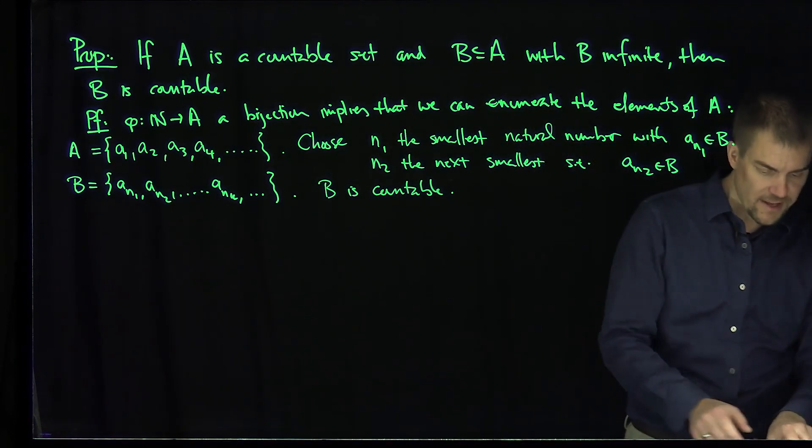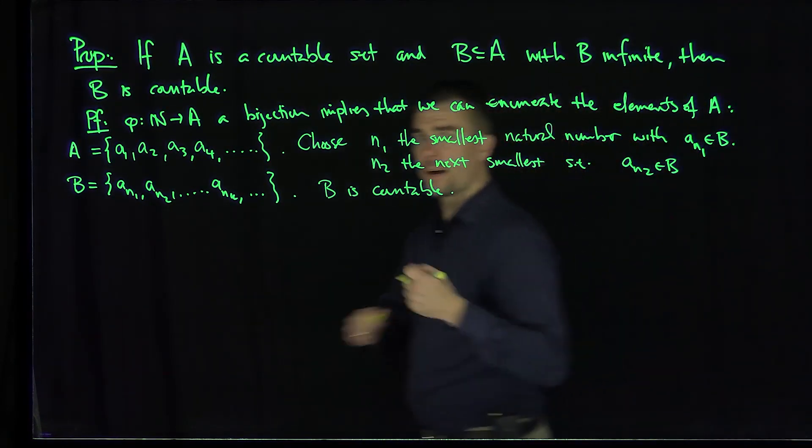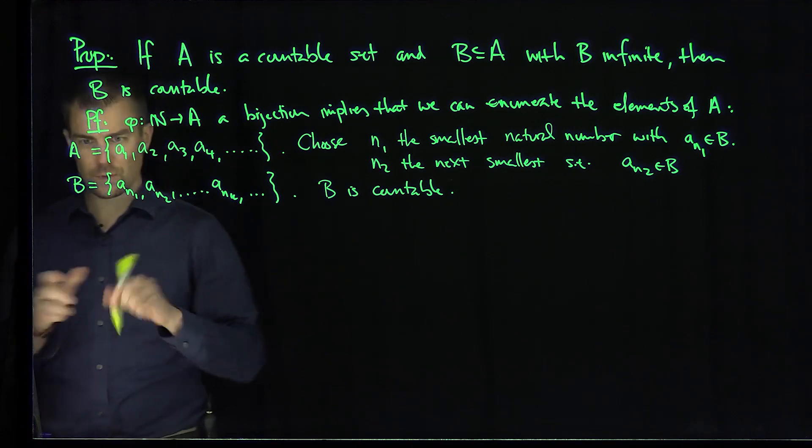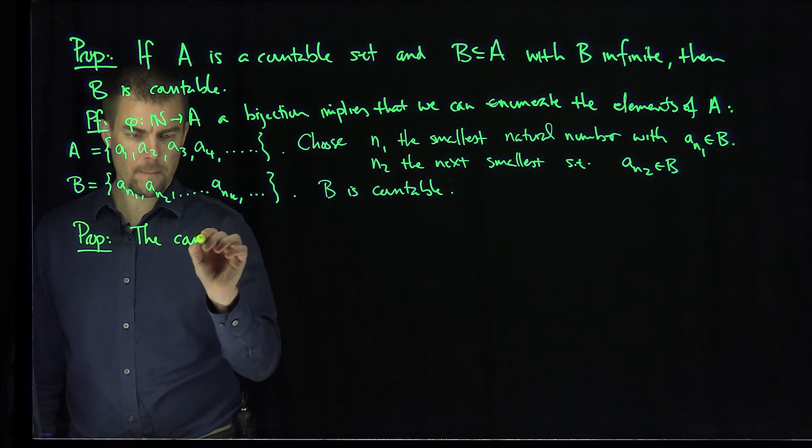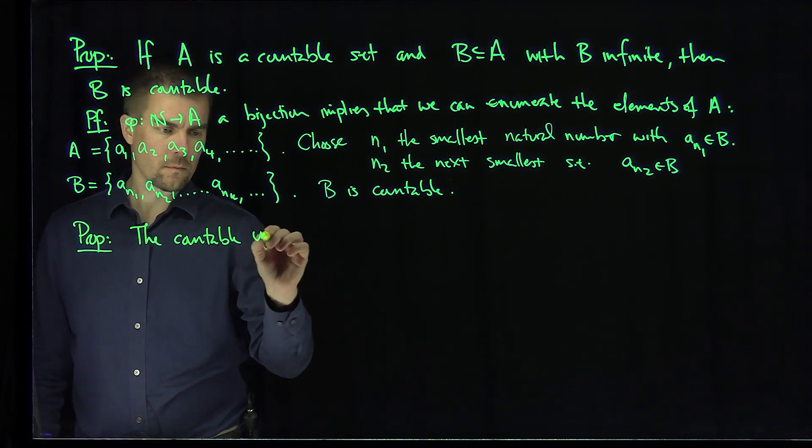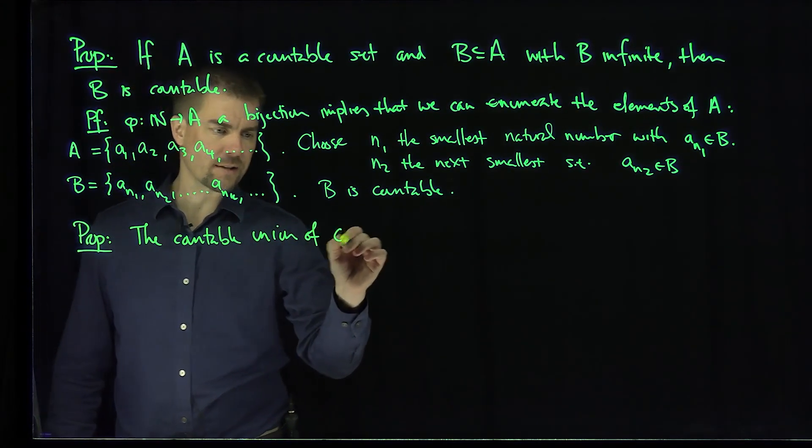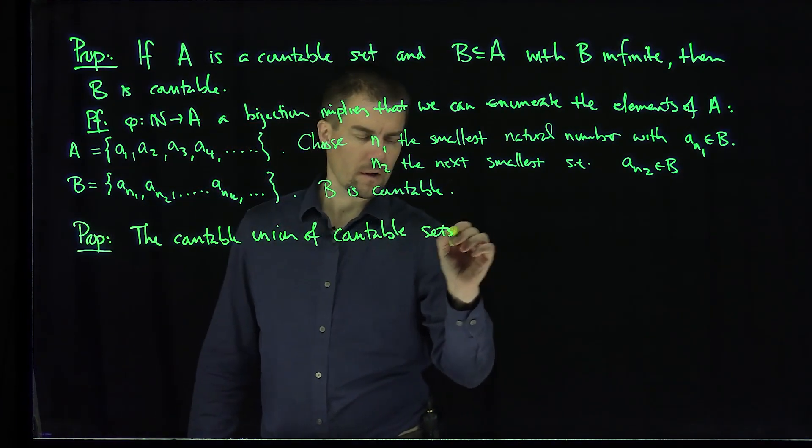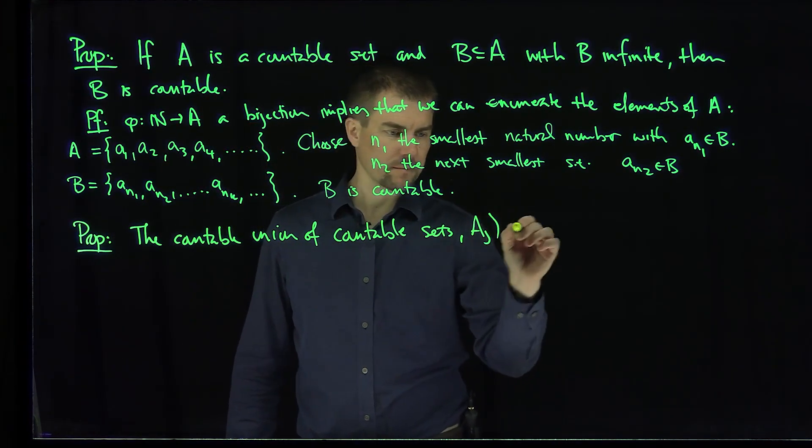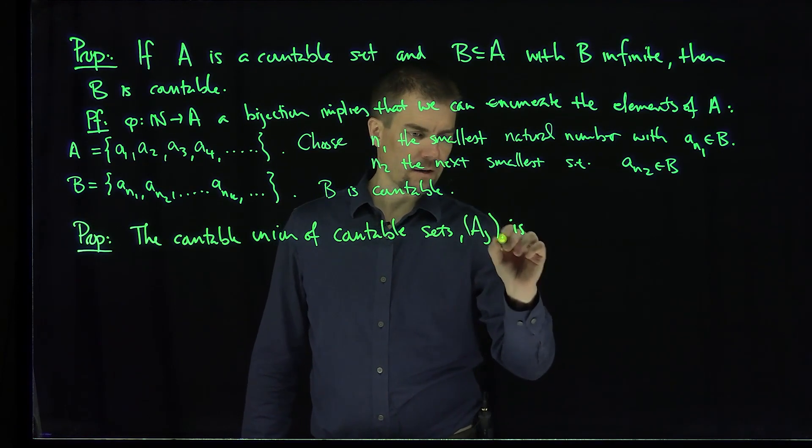The second result we have is that the countable union of countable sets is countable. So proposition, the countable union of countable sets, as we can call these sets A_J, is countable.